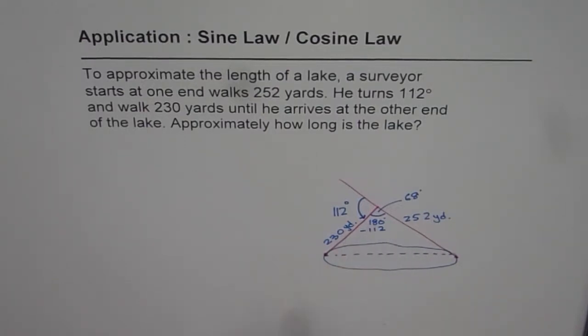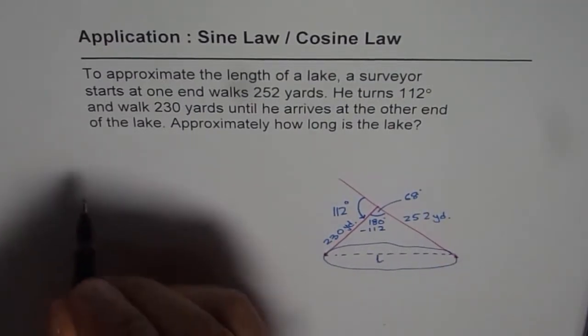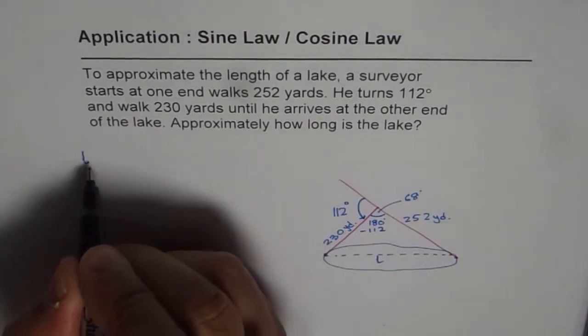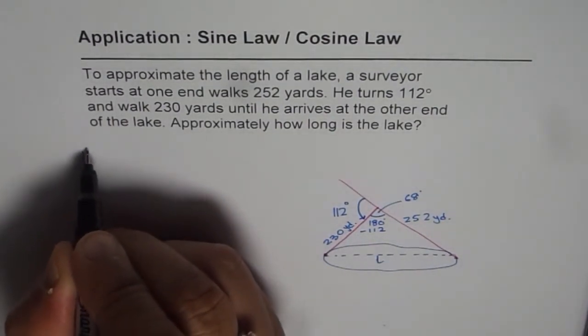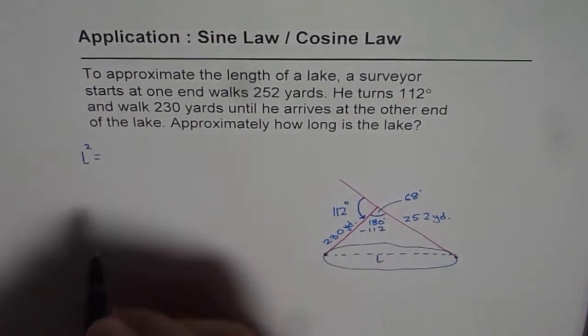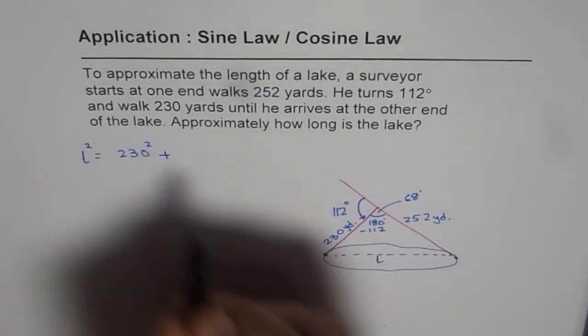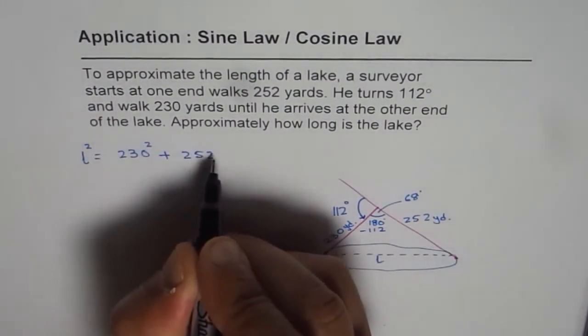Since we know two sides and the included angle, we can apply the cosine law and find the length of the lake, the third side of the triangle. Let's say the length of the lake is L.